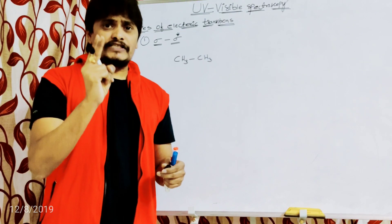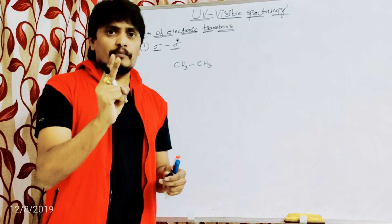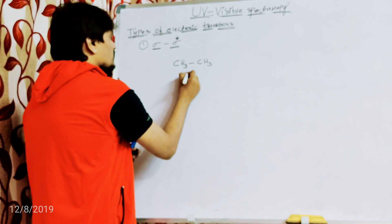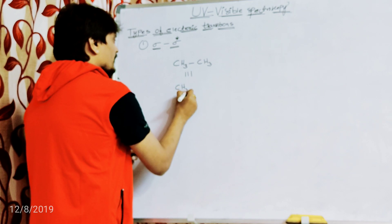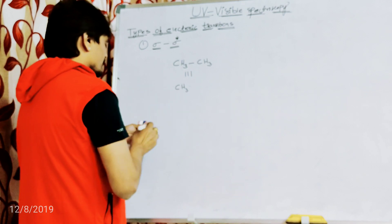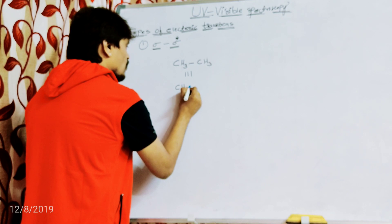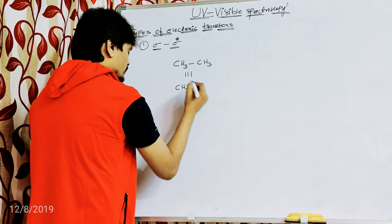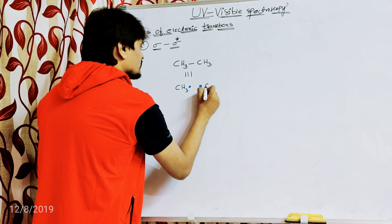The good example is ethane, CH3-CH3. The bond is the combination of two electrons, so I am writing this in the form CH3 and representing the bond in terms of its two electrons.